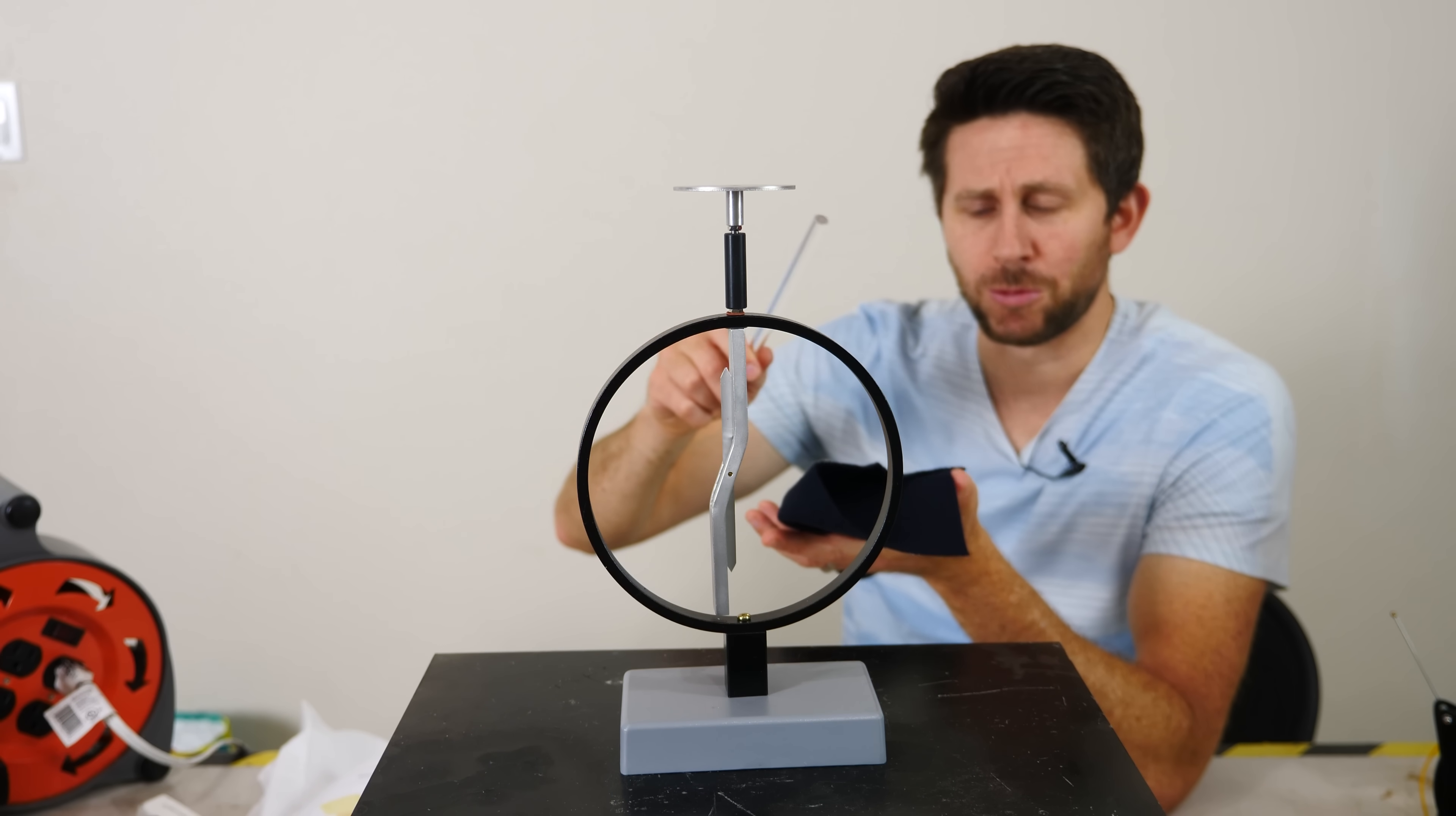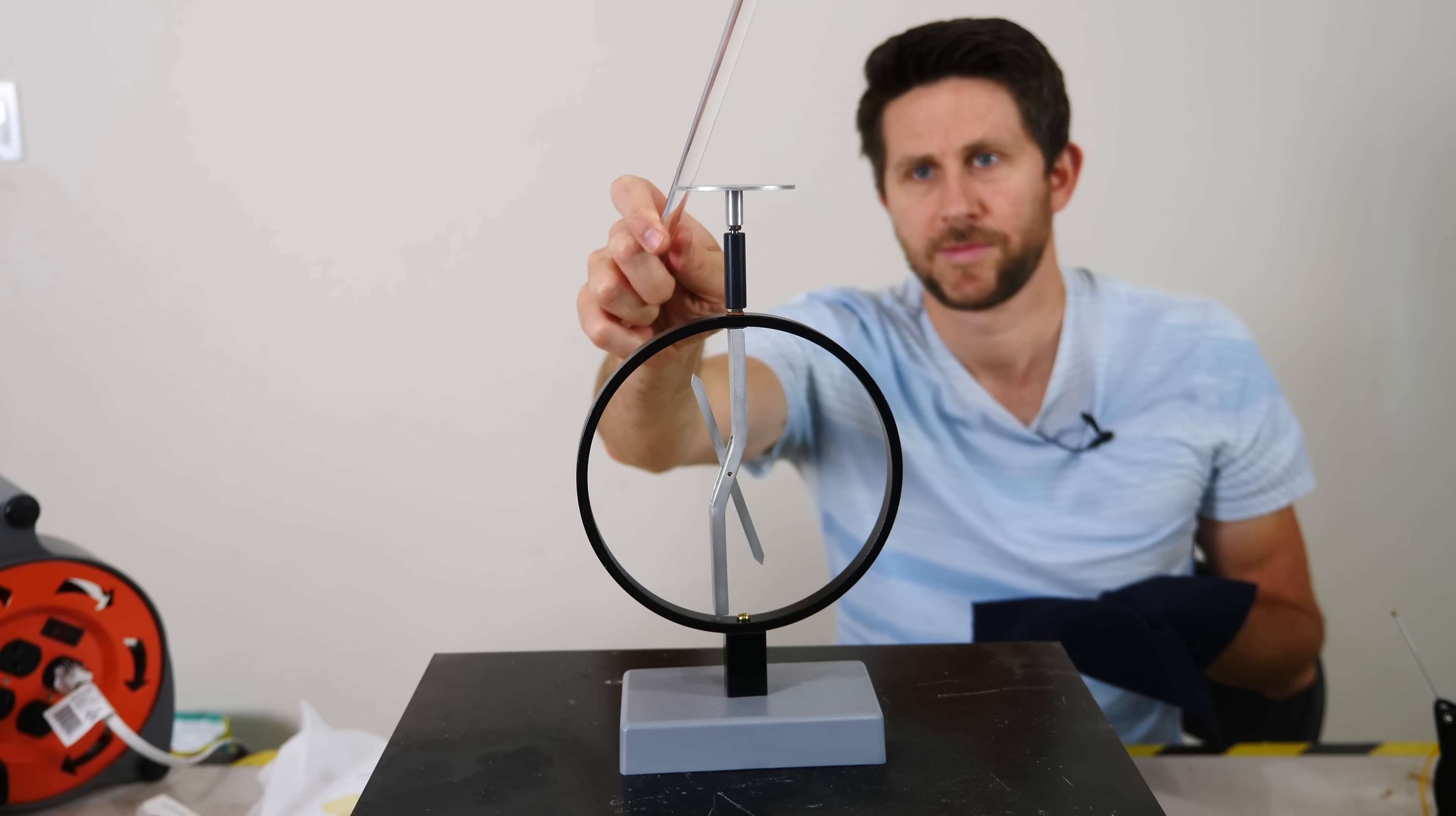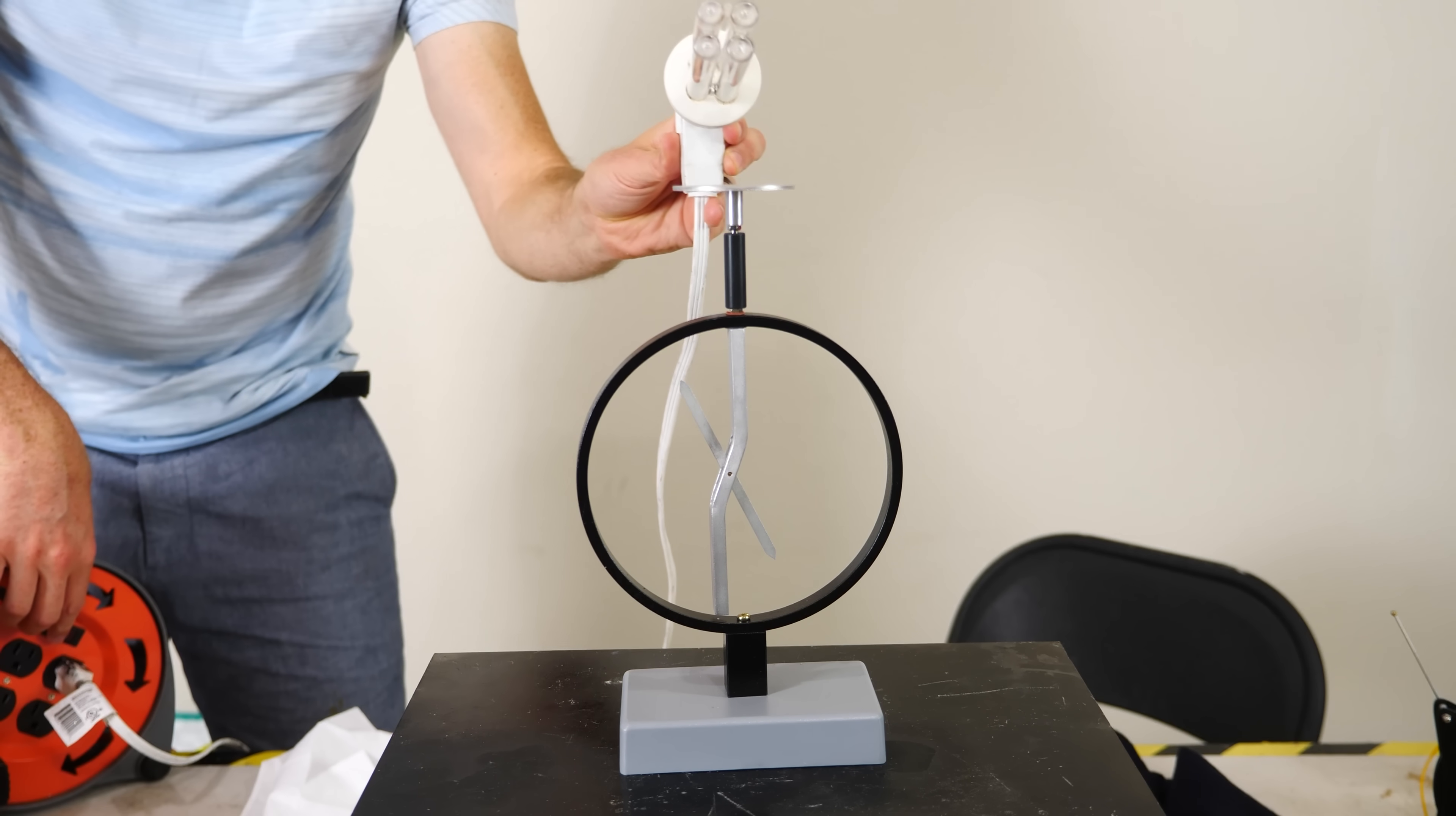So when I rub this plastic against wool, it's actually going to strip the electrons off of the plastic so that it leaves this positively charged. Now these positive charges, they can't be knocked loose as easy as these electrons because the positive charges are really large. They're the protons in the nucleus of the atoms. Let's try to discharge this with the UV light now.